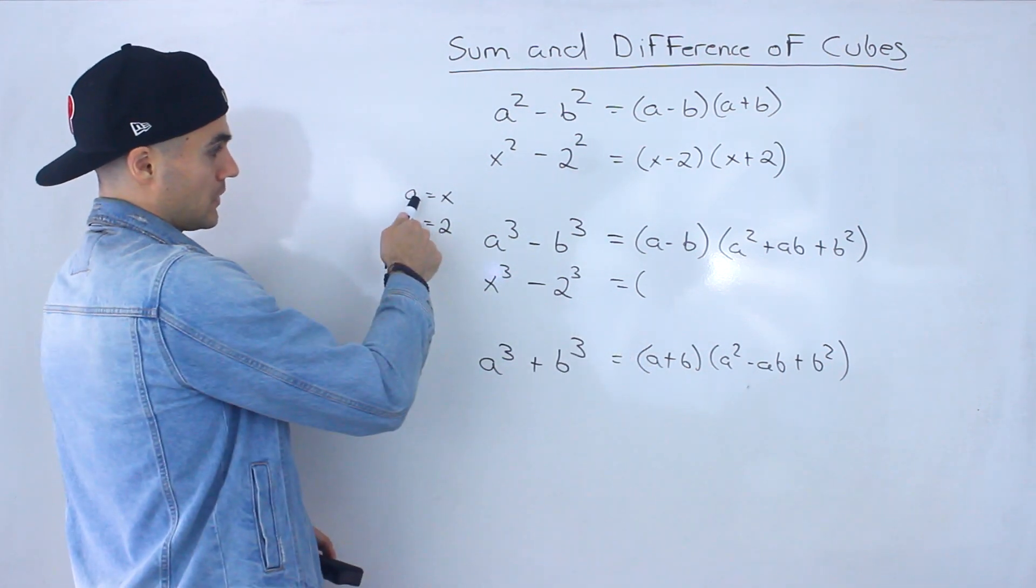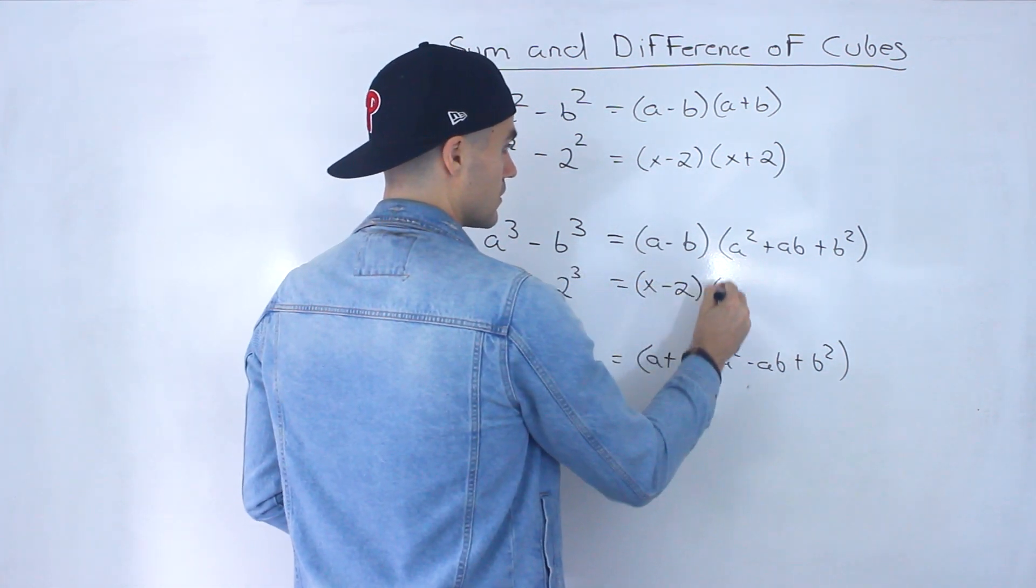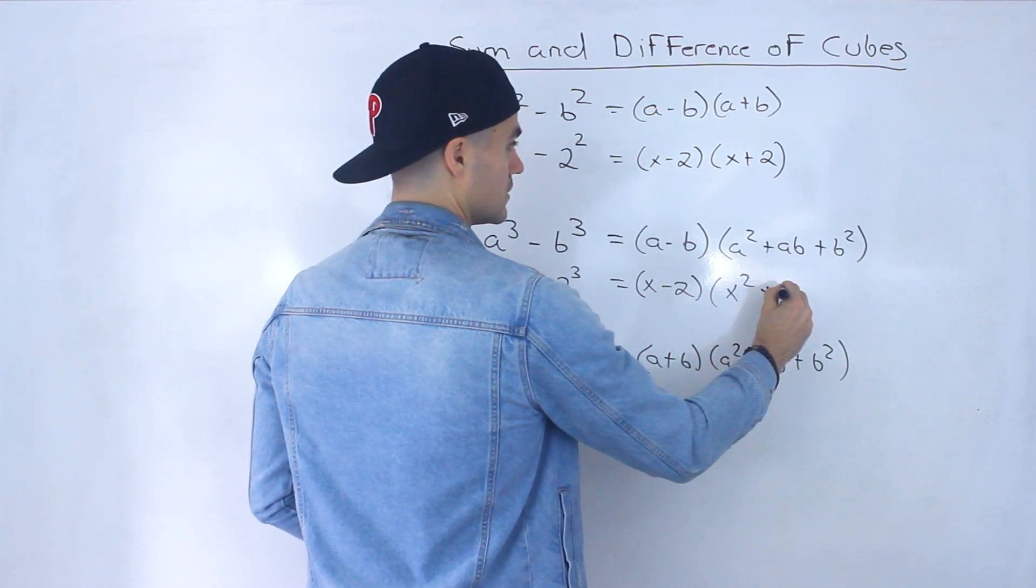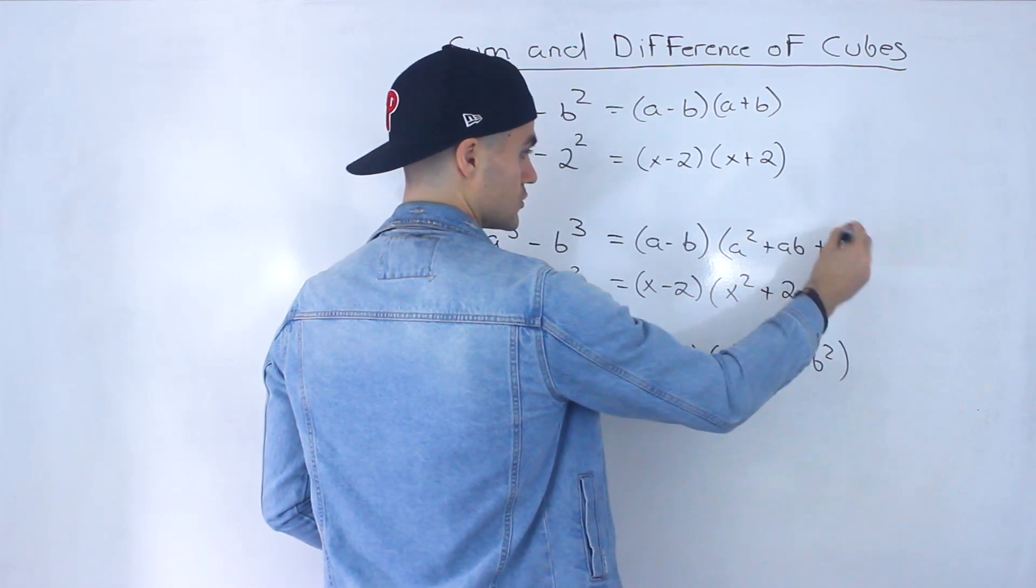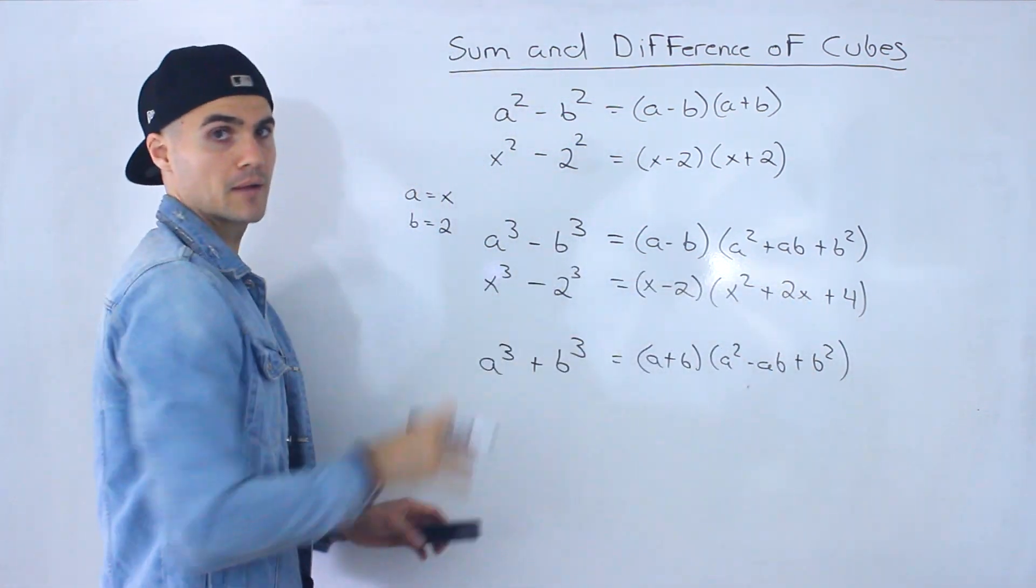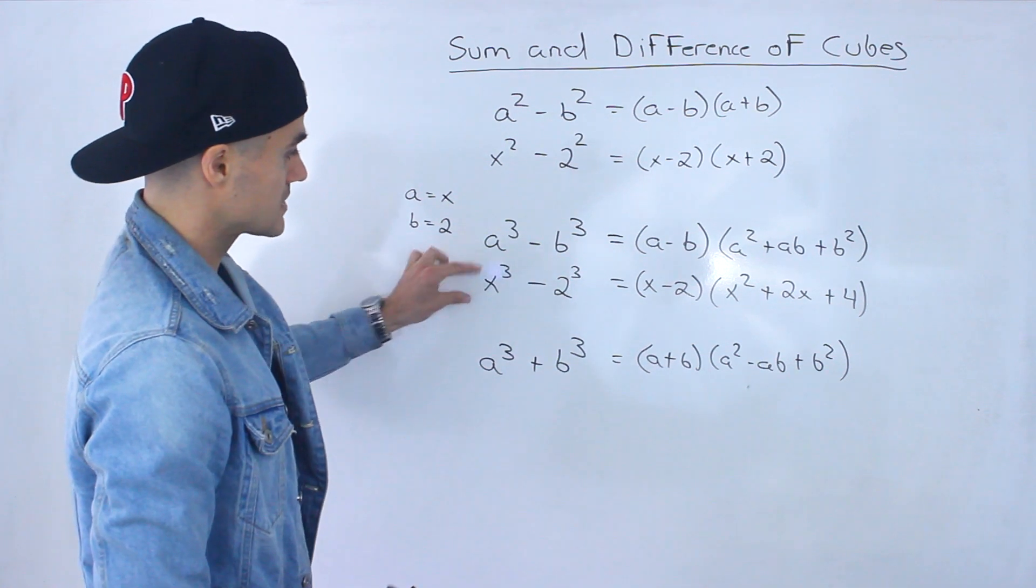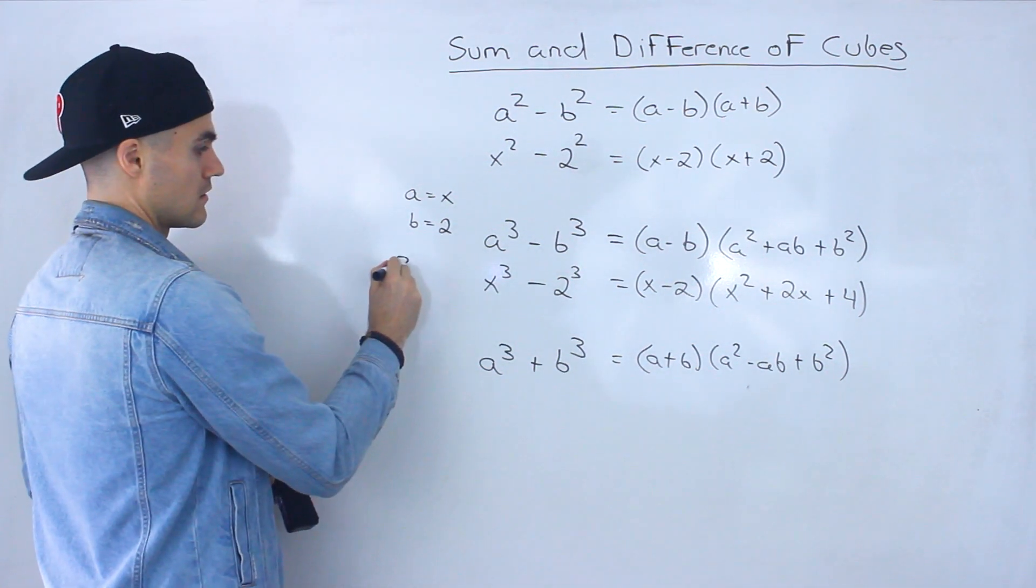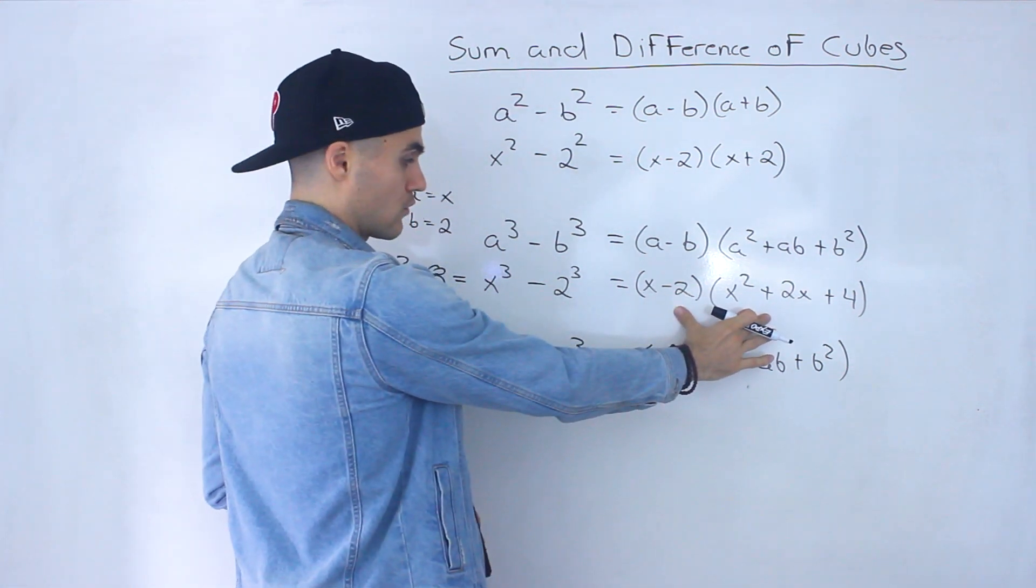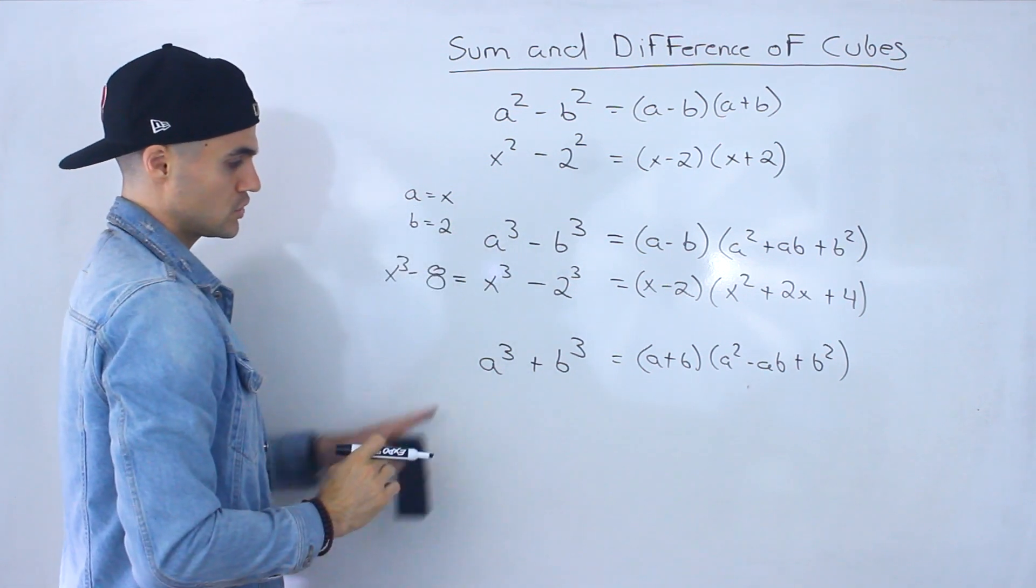So knowing that x is a, 2 is b, subbing them in, you would have x minus 2, a squared, so you'd have x squared plus 2x plus 2 squared, which is 4. And this bracket here is never going to be able to factor further. So x to the power of 3 minus 8 factors into this over here. So that's an example of a difference of cubes.